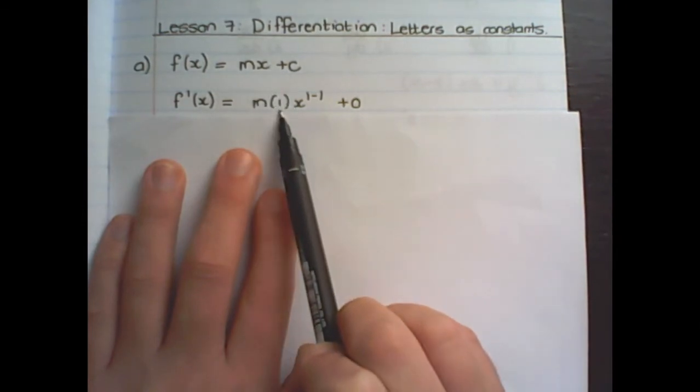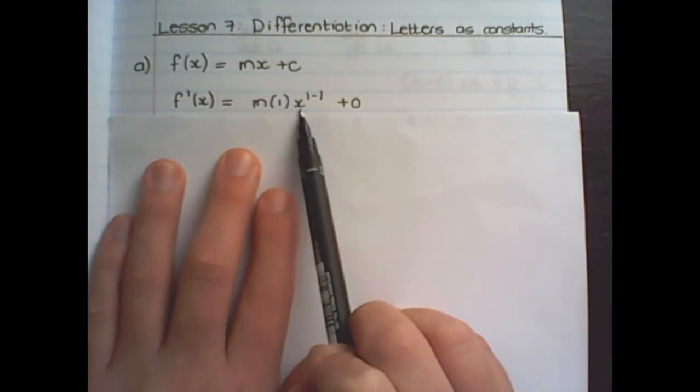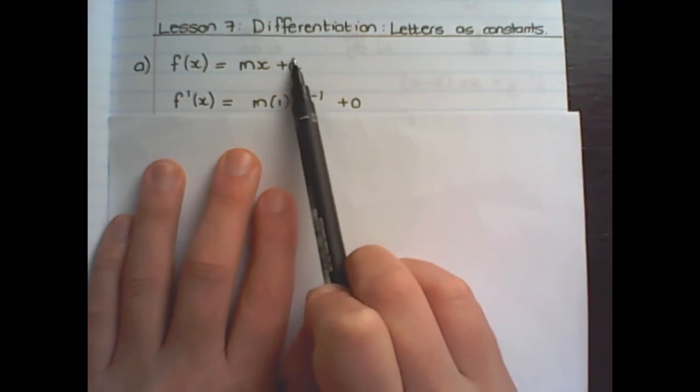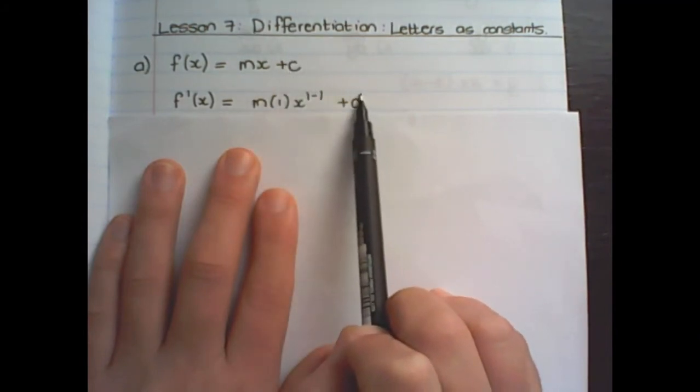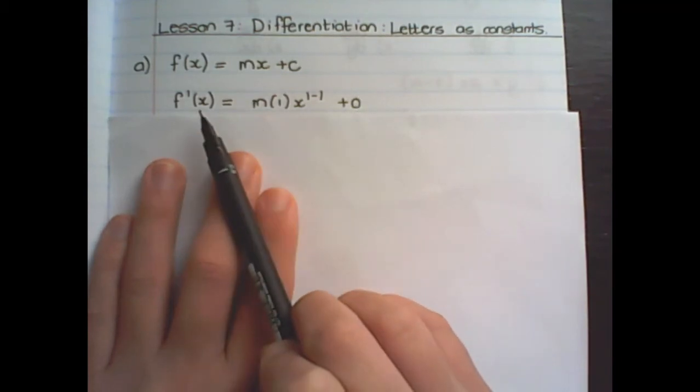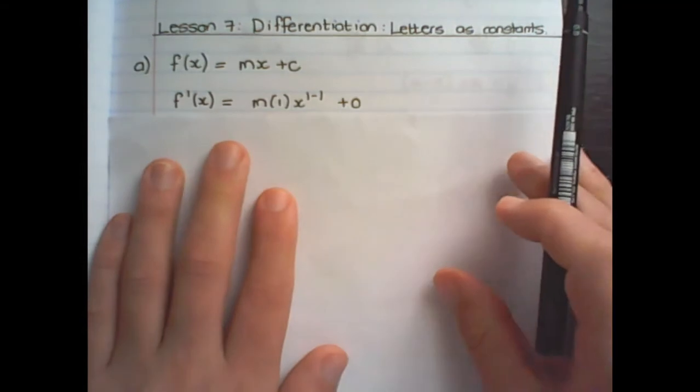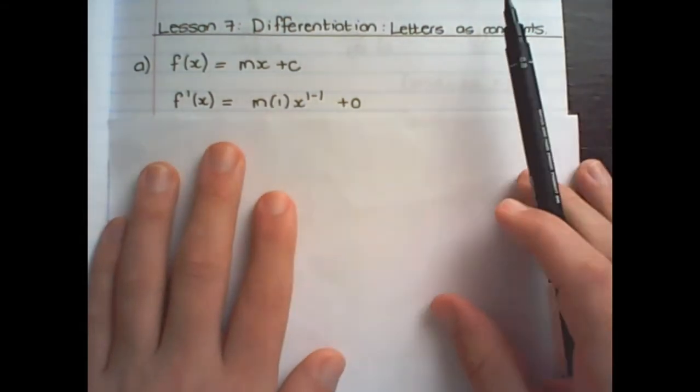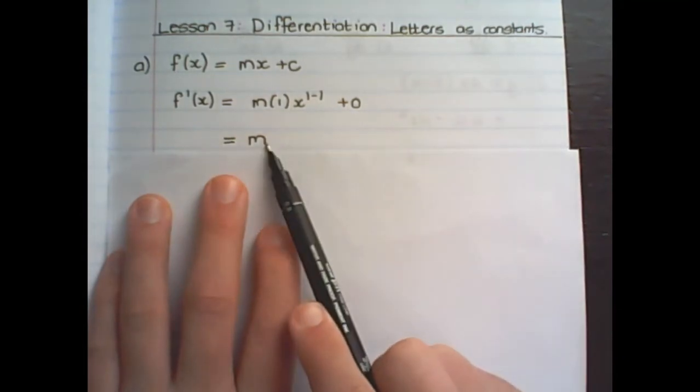The exponent of x is 1 and in the exponent I subtract 1. c is a constant value so therefore there is no variable so it becomes 0 when I differentiate. And if I simplify I have m times 1, x to the power of 0, which is simply m.